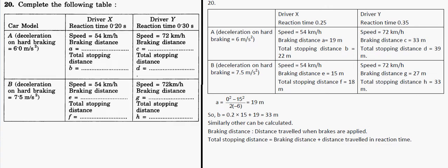Hello friends, let's see question number 20. Here the table is given: car model A deceleration on hard braking, B deceleration on hard braking for the second one. Car model A and B, driver X having reaction time of 0.20 seconds, driver Y is there which is having more reaction time, nearly about 0.3 seconds.